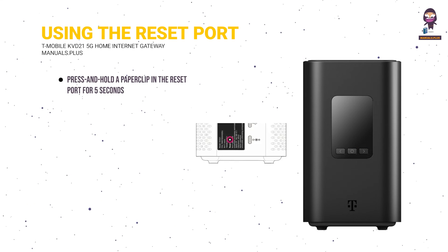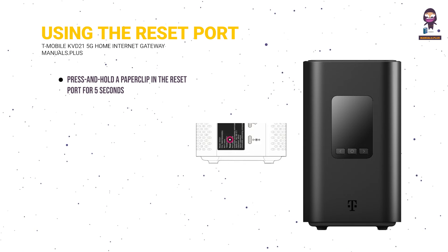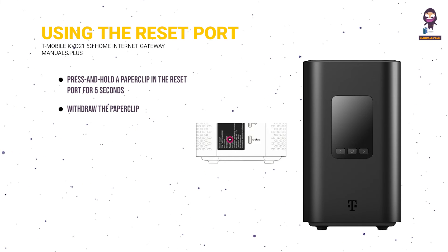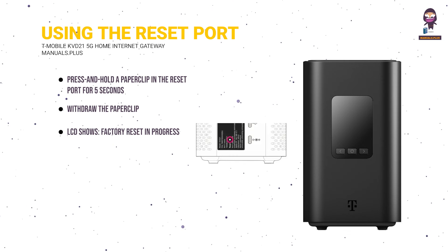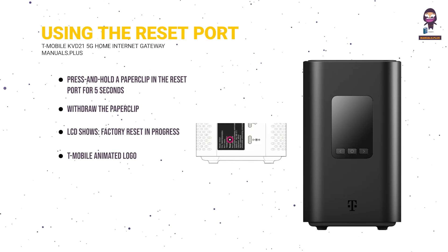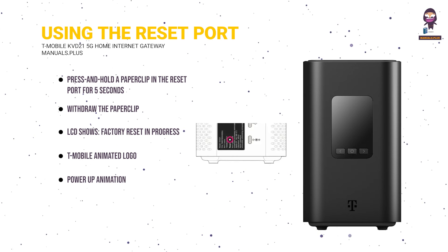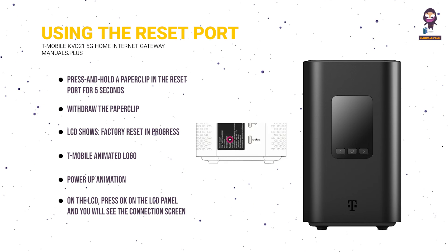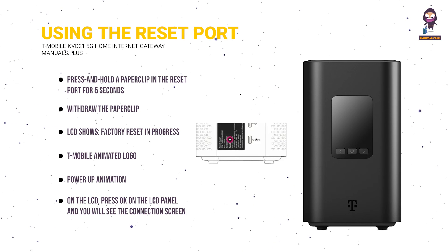Using the reset port, press and hold a paperclip in the reset port for 5 seconds, then withdraw the paperclip. The LCD shows: factory reset in progress, T-Mobile animated logo, then power-up animation. On the LCD panel, press OK and you will see the connection screen.